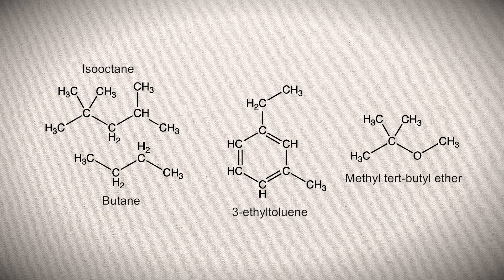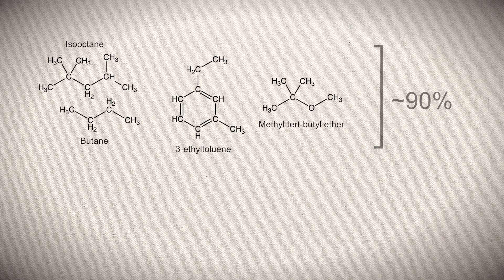Gasoline is composed mostly of hydrocarbons with 4 to 12 linked carbon chains. Here are some of the common hydrocarbons in gasoline: iso-octane, butane, 3-ethyl-toluene, and methyl-tertbutyl ether. In the US gasoline is composed of about 90% of these hydrocarbons.